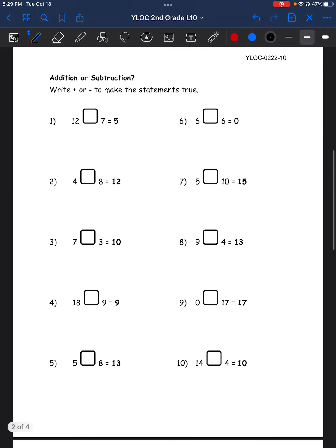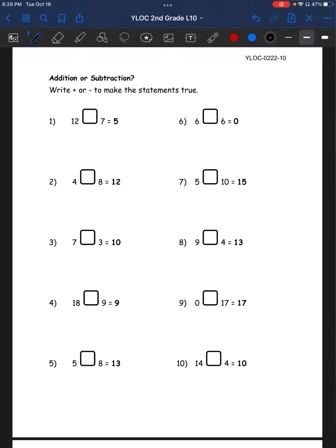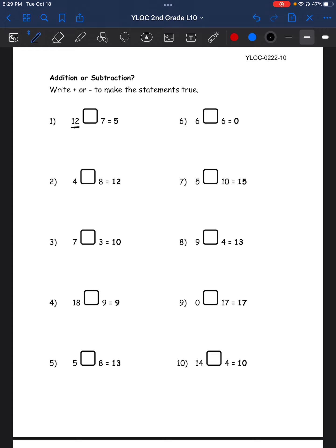Addition or subtraction. Write plus or minus to make the statement true. So let's see. 12. Is it plus 7 to equal 5 or minus 7? Well, 12 is bigger than 5, right? So in order to make this number smaller, you have to have a subtraction equation. So in this case, it would be 12 minus 7 equals 5.